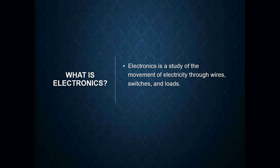What is electronics? Electronics is simply the study of the movement of electricity through wires, switches, and loads. That is the basics of your circuitry in an electrical circuit. You've got to have a power source, you've got to have wires, you've got to have switches, and you've got to have loads. Loads in an electrical circuit are what use the electricity to do something — whether that's to generate heat, make a motor spin, or make contacts on a contactor or relay close or open.